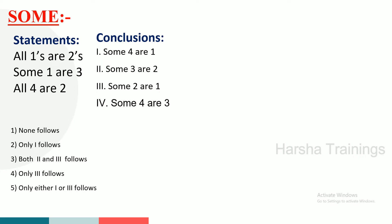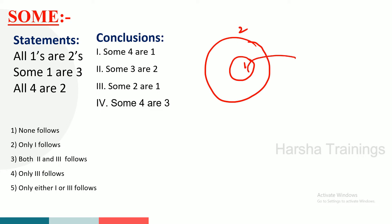All 1s are 2s. Next, some 1 or 3. So, all 1s are 3s. Next, all 4s are 2s. No 1s are 4s. So 4s are 2s — there is a relation between them.